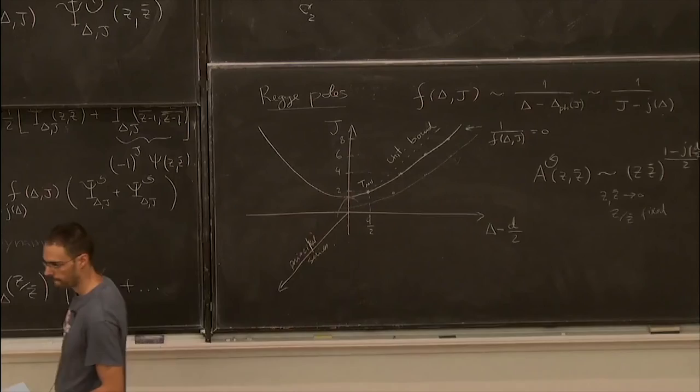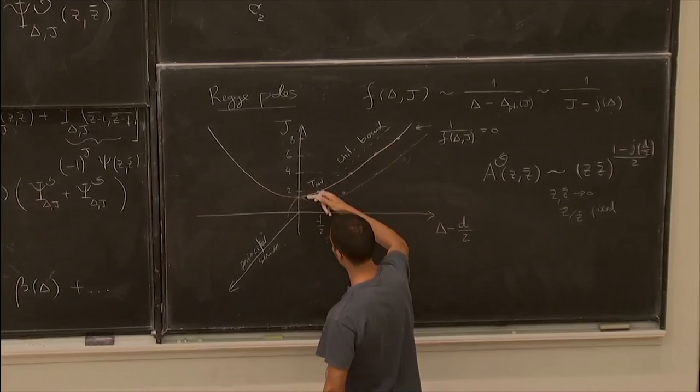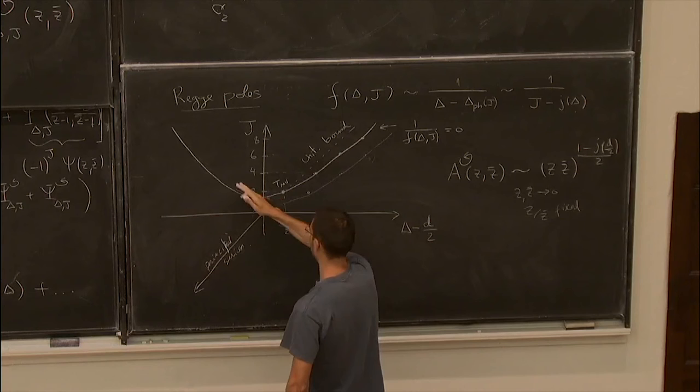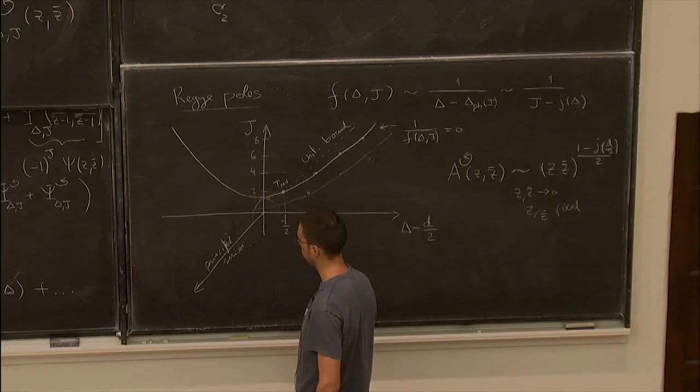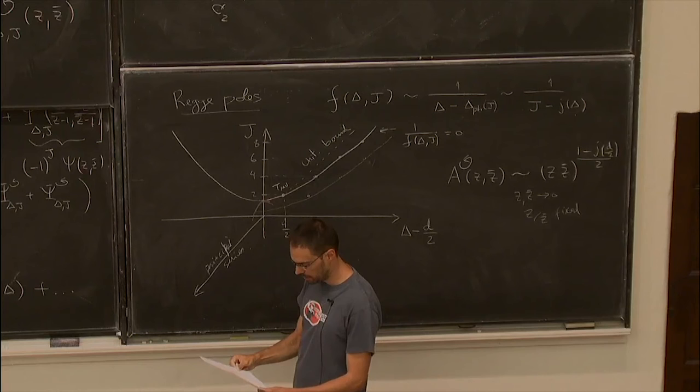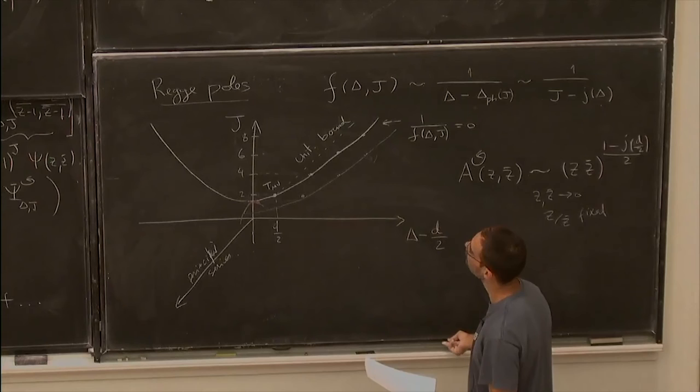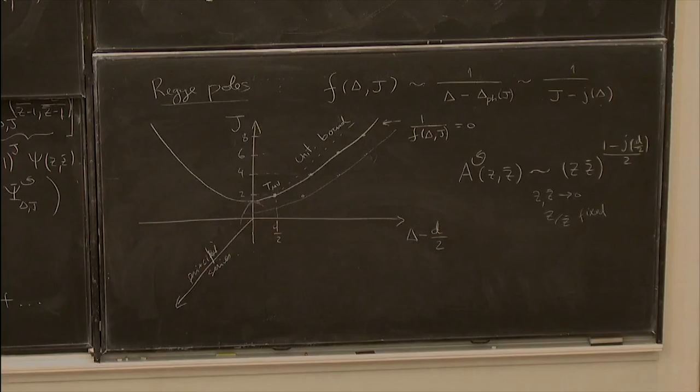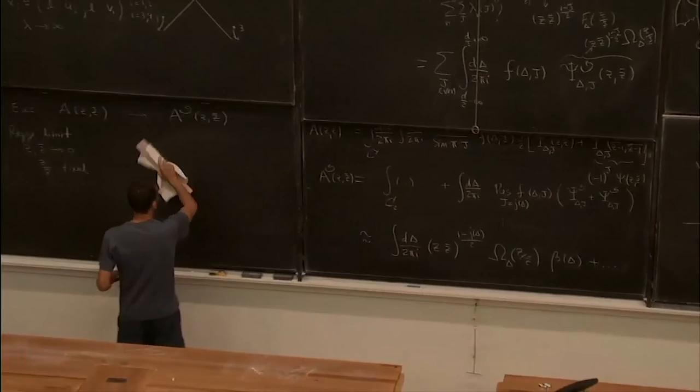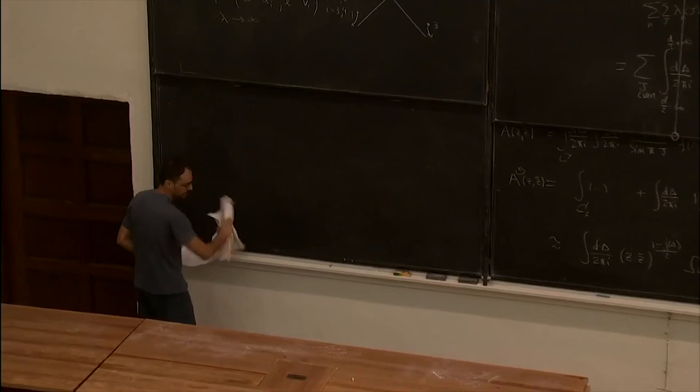Why is that curve shaped like an upside-down parabola? Because this is an analytic function, the derivative is zero here and the second derivative is positive, so it's a saddle point — analytic functions don't have true maxima or minima. The last point I want to comment on briefly is that this tells us immediately bounds on this intercept, because we know the function cannot grow in this limit.